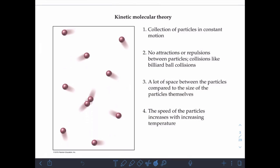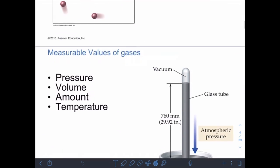The fourth part of kinetic molecular theory: the speed of particles increases with increasing temperature. If you raise the temperature of a gas, the molecules move faster; if you cool them down, they move slower. Getting close to absolute zero, almost all molecular motion ceases. There are four main things we can measure with gases: pressure, volume, amount of gas, and temperature.